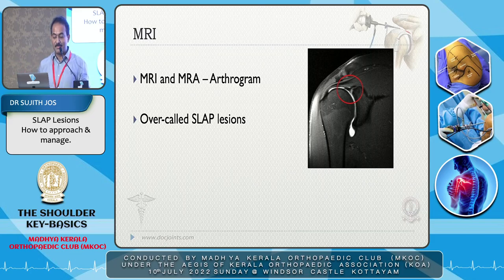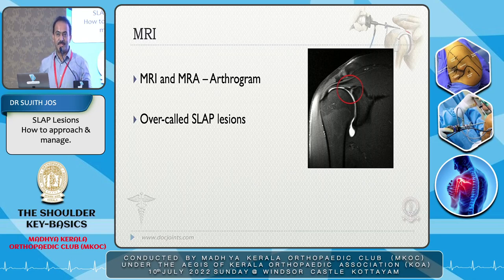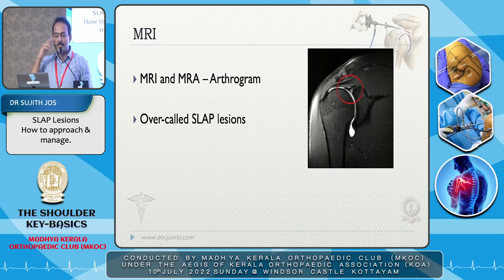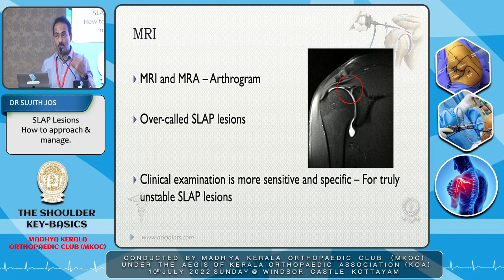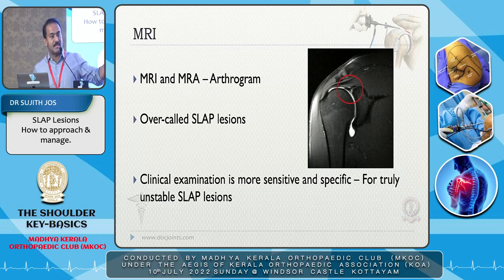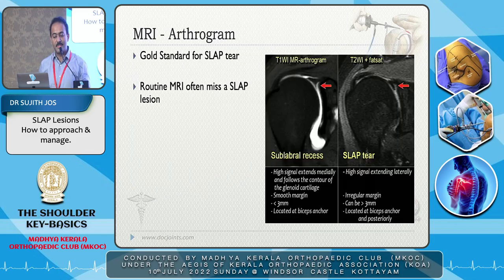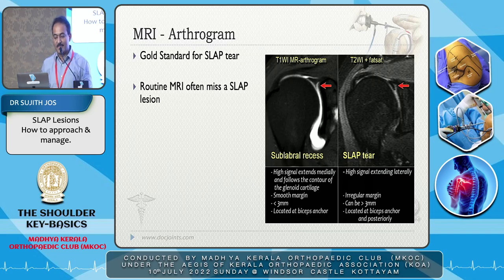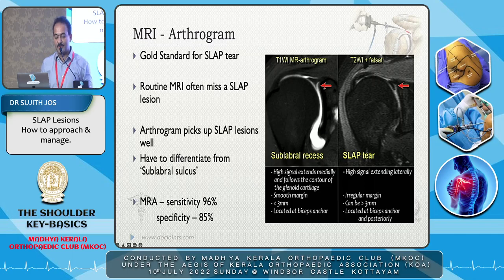A plain MRI may miss a SLAP tear unless there is fluid in the shoulder. The PDFS (proton density fat suppressed) image or STIR image is advisable — look at that image and you will pick up most pathologies. Look at the coronal and axial cuts to pick up most instability pathologies. The coronal image is important for picking up SLAP lesions, but may overcall them — a sublabral recess might be mistaken for a SLAP. Clinical examination is more specific and sensitive for an unstable SLAP tear. Even if the tear is present, it may not be symptomatic, especially in older patients, and rehabilitation alone can be sufficient.